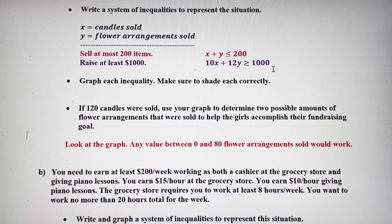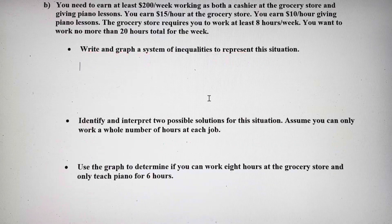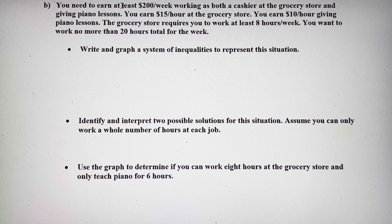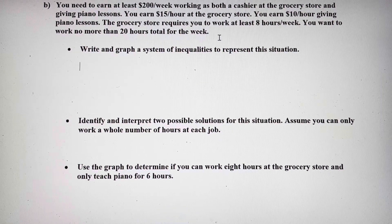Pause the video and give part B a try. There are going to be three inequalities for this system, so try to come up with three inequalities, graph those, and then answer the questions that follow. You need to earn at least $200 a week. You have two jobs — one at a grocery store and one giving piano lessons. The grocery store requires you to work at least eight hours a week, and you want to work no more than 20 hours total for the week.